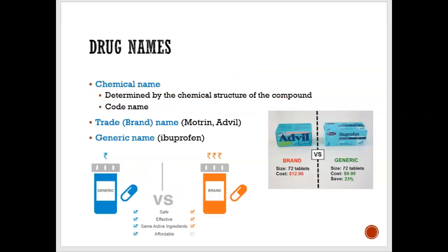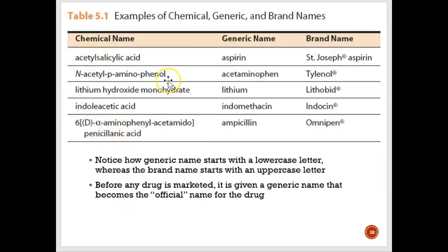Now let's look at drug names. There are three different types: a chemical name, a trade or brand name, and a generic name. The chemical name is basically the chemical structure of the compound. On this slide you can see how chemical names are really, really long compared to their generic and brand names — they usually have complex, fancy terminology, and that's how you know it's a chemical name.